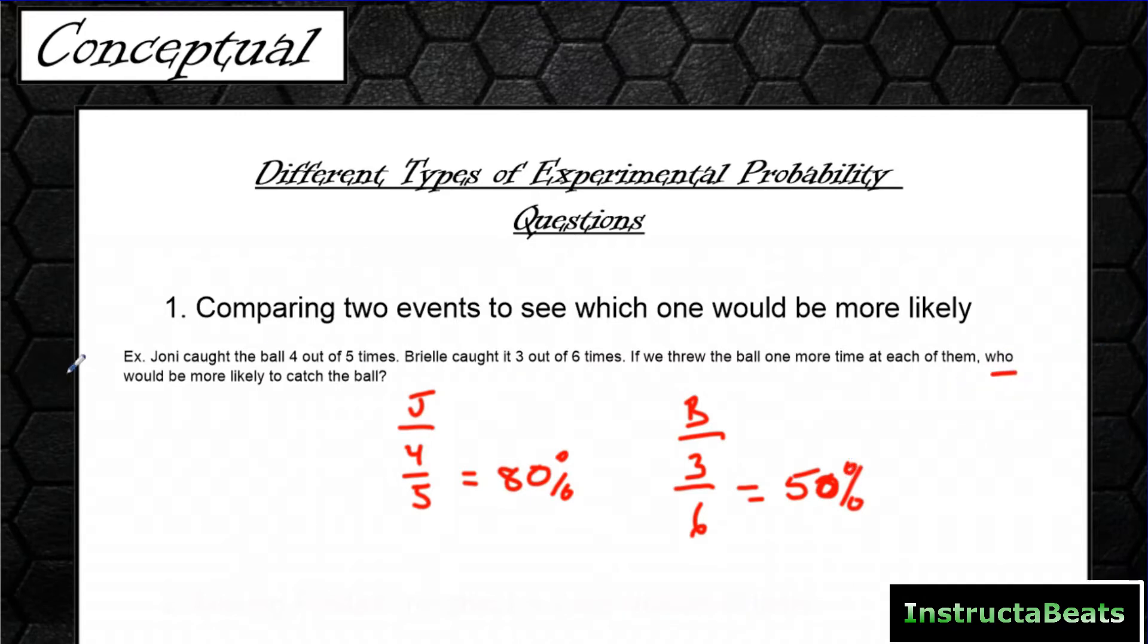Based on our experiment, Joni has caught the ball 80% of the time and Brielle has caught the ball 50% of the time. So in this type of question, you're just comparing using your experimental probability. Who is going to be closer to 100%? I like to turn them into percents and then compare the percents. You can see here that Joni has caught it 80% of the time. So if we threw one more to each of them, I would predict Joni would be more likely to catch the ball. So that one's pretty easy.